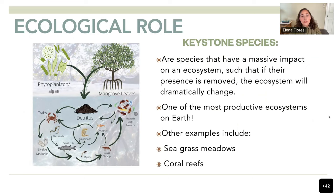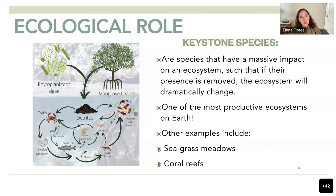They are considered keystone species, meaning they play a very important ecological role in the ecosystem. If you remove mangroves, the entire ecosystem can collapse. They are considered one of the most productive ecosystems on Earth. Other keystone species include seagrass and coral reefs, and we also have seagrass in Laguna Madre — a very important ecosystem we're trying to conserve.